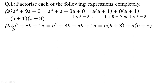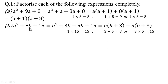Similarly, in the next part, given b² + 8b + 15. We multiply 1 by 15 to get 15. When multiplying both values the answer is 15, and when added the answer is 8. So 8 is divided into 2 parts: 3 plus 5 equals 8, and 3 times 5 equals 15.